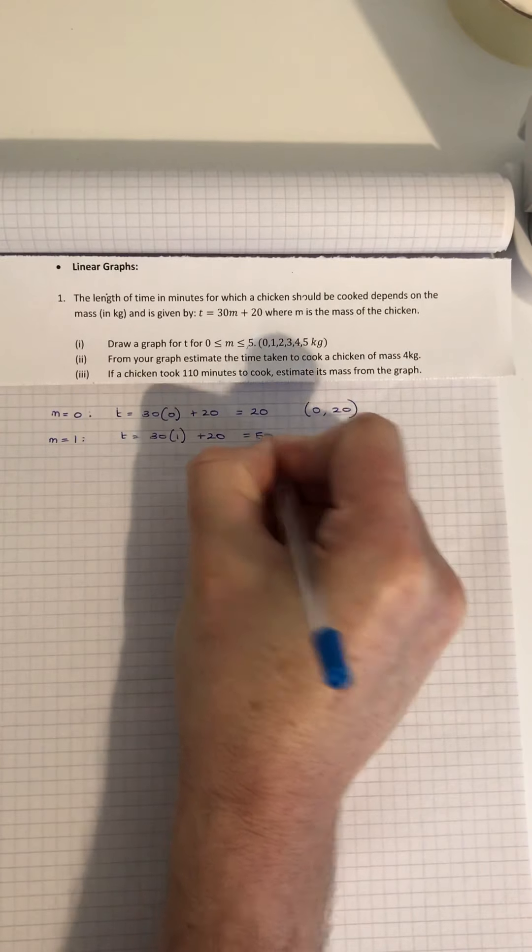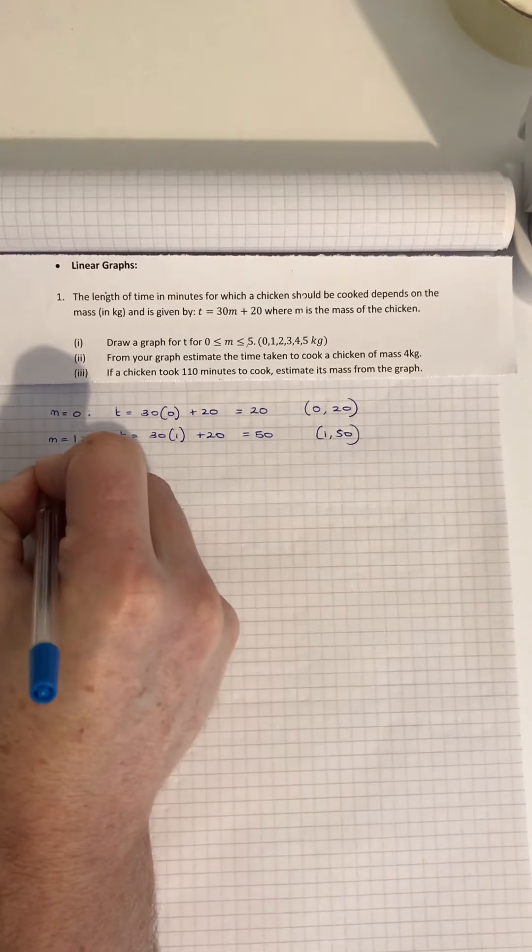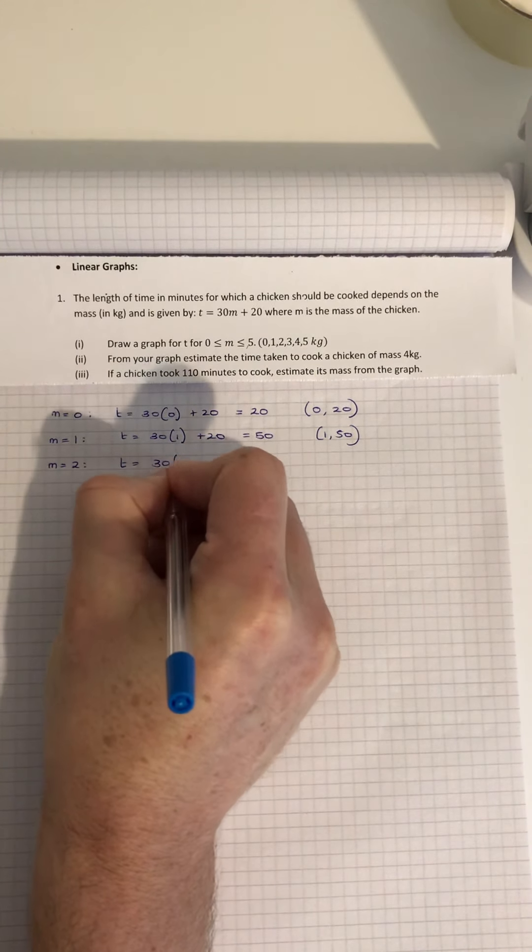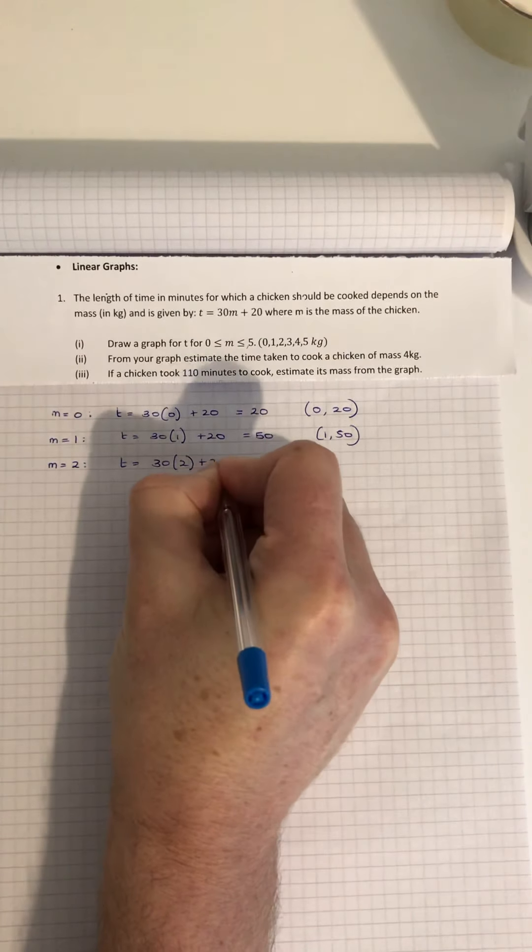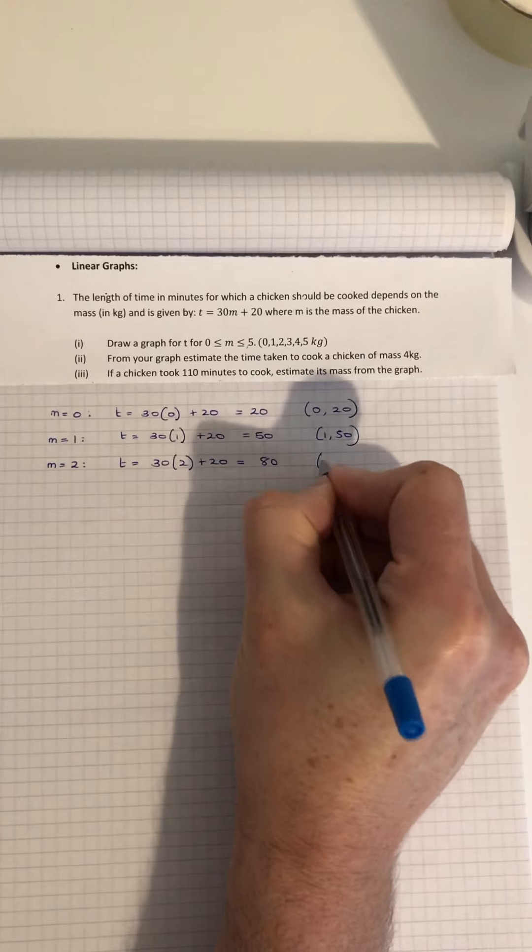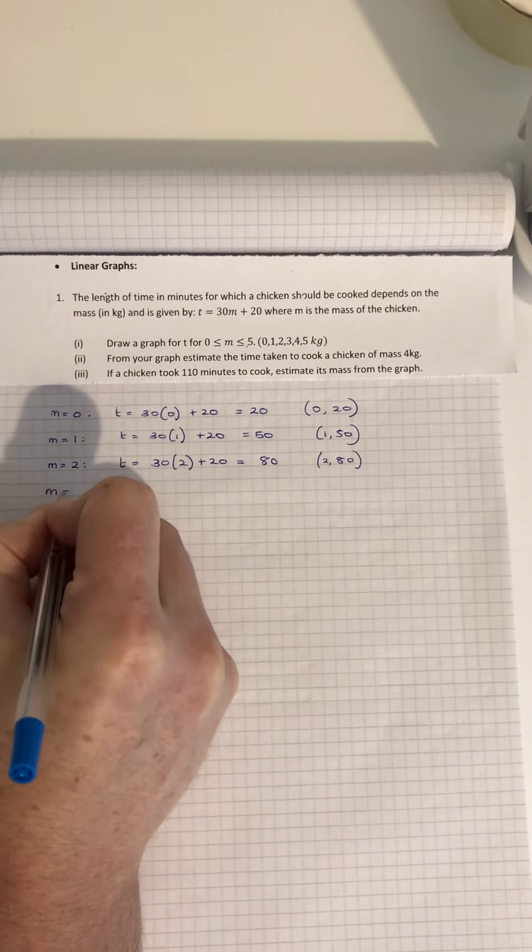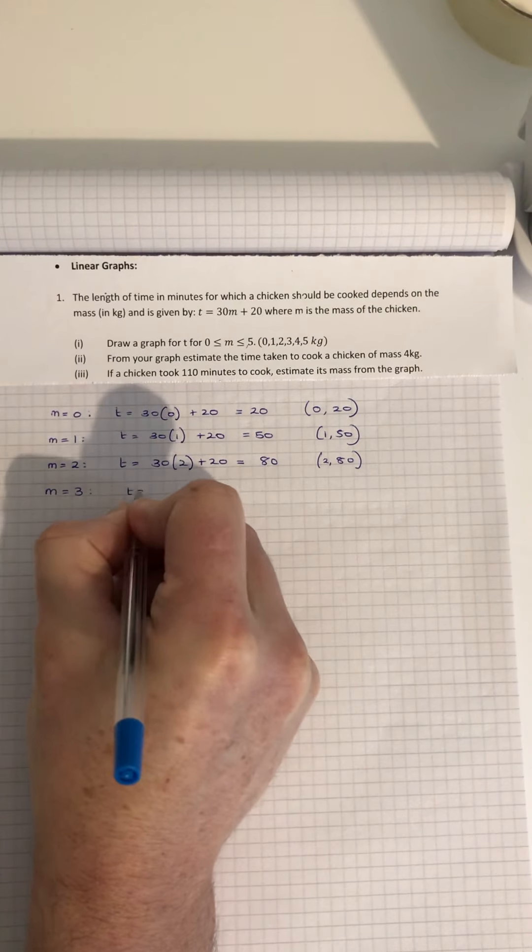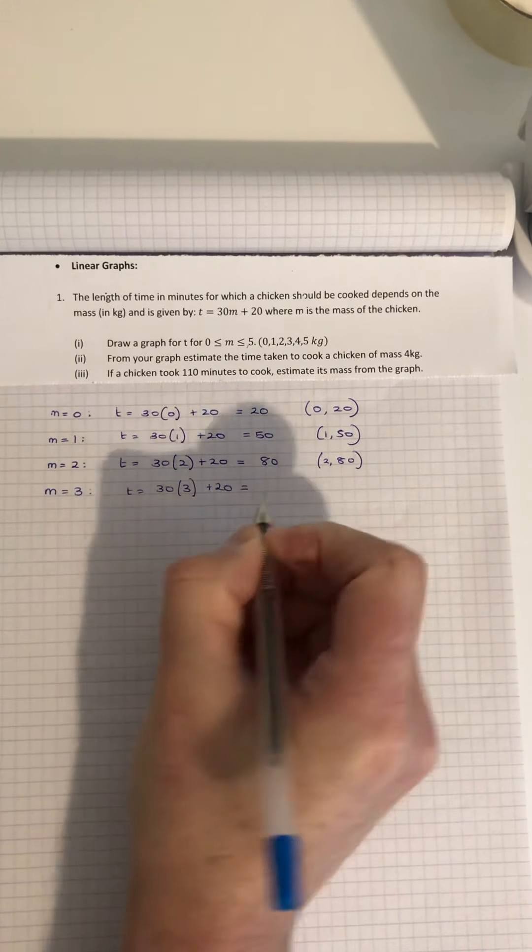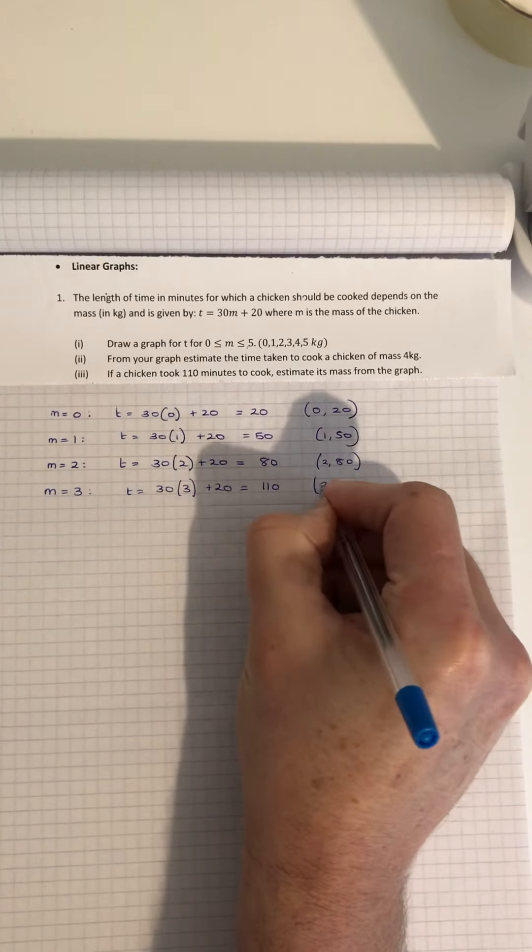...plus 20 minutes, which is 60 and 20, which is 80 minutes. So 2 kg is 80 minutes. If m is 3, time is 30 times 3 plus 20 minutes. 30 times 3 is 90, plus 20 is 110. So 3 kg, 110 minutes. If m is 4, the time is 30 times 4 plus 20...